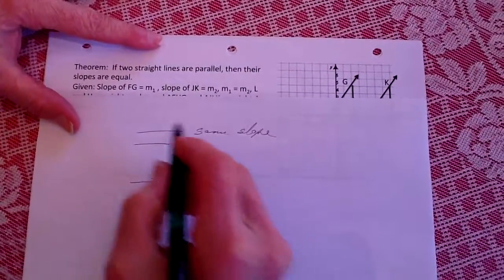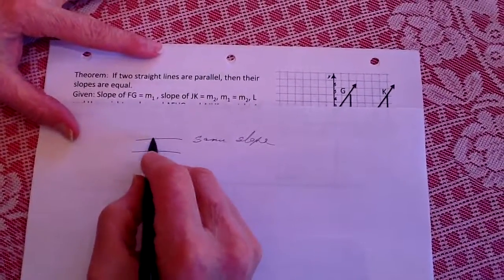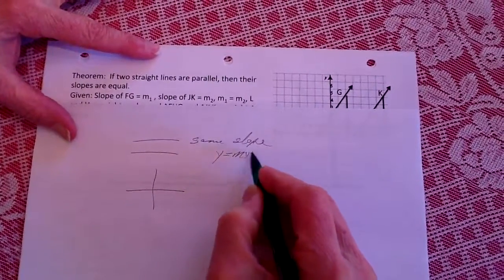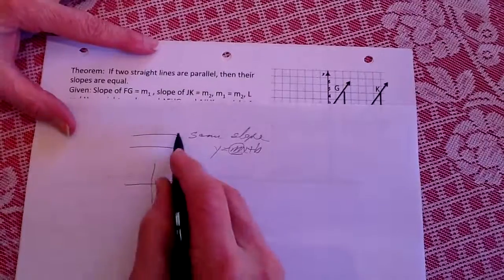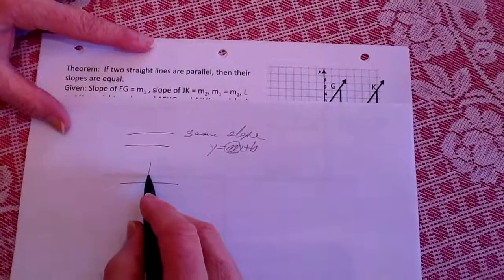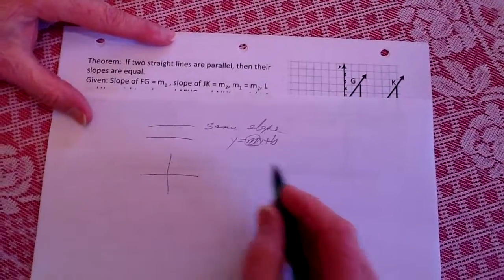For instance, we'll prove this being that we know y equals mx plus b, and if both of those have the same m then they're going to be parallel, whereas perpendicular lines...